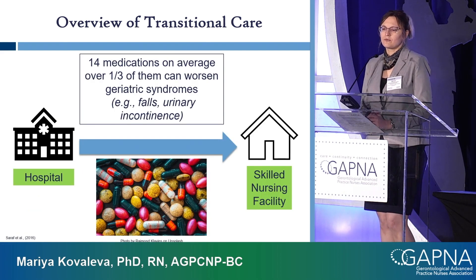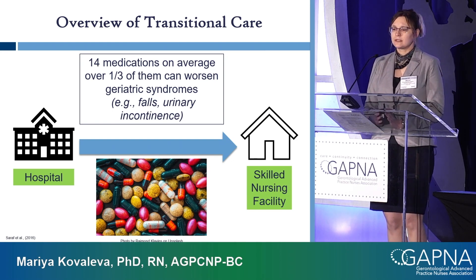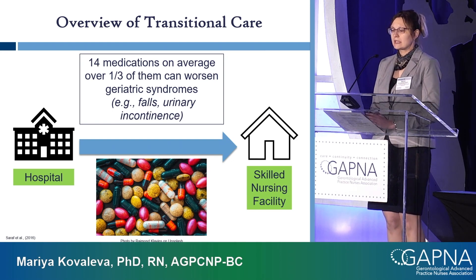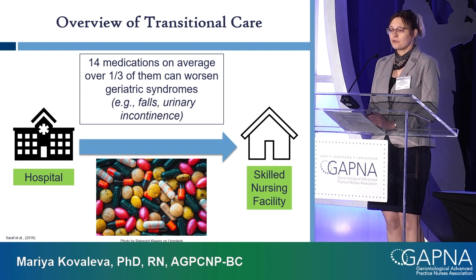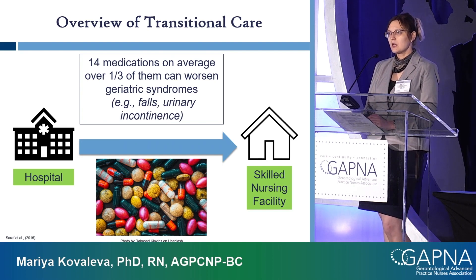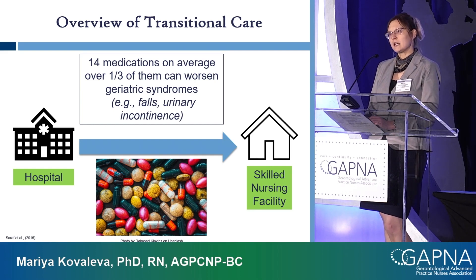According to one study out of Vanderbilt, when older adults transition from hospital to a skilled nursing facility, they have on average 14 medications. And out of those 14, a third can worsen geriatric syndromes — things like falls, urinary incontinence, malnutrition, and dehydration. Those are issues you are likely dealing with on a daily basis.